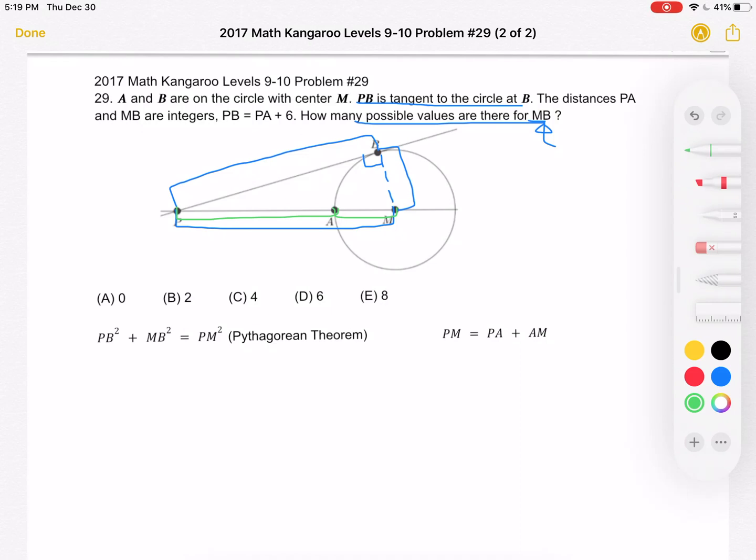which means that AM is the same length as MB. They're both the same radius. So we can rewrite PM as being equal to PA plus MB.